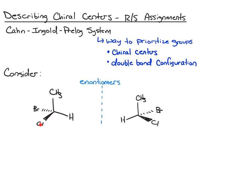On carbon one, we have a bromo and a chloro. So if you were writing the IUPAC name for either one of these, you would write 1-bromo-1-chloroethane. But that's not enough information because we have chiral centers — these two things are stereoisomers and they are different molecules. For that reason, we need to further define the name to tell the reader which particular enantiomer we're describing. That's where the R&S assignments come in.